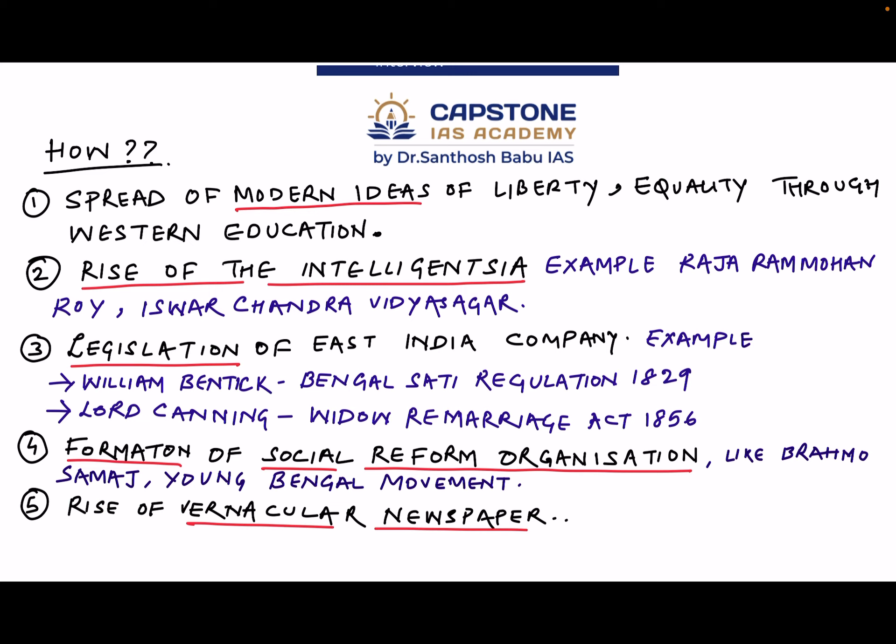Point two: the rise of the intelligentsia — people like Raja Ram Mohan Roy and Ishwar Chandra Vidyasagar who fought for the rights of women. Point three: legislation by the East India Company. It was due to this intelligentsia that the Company realized the atrocities women in India were facing. Hence, it was William Bentinck during whose era the Bengal Sati Regulation of 1829 was passed, making sati illegal. Similarly, in 1856, Lord Canning passed the Widow Remarriage Act.